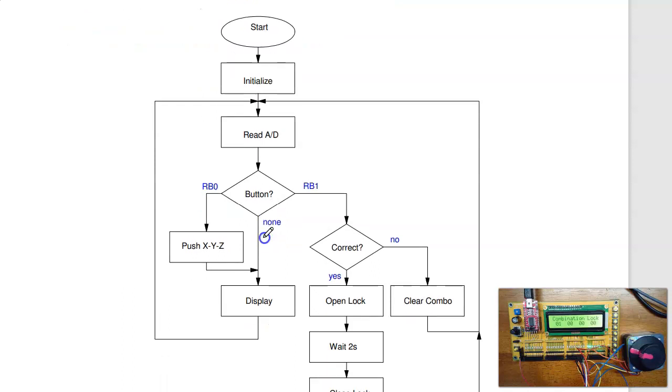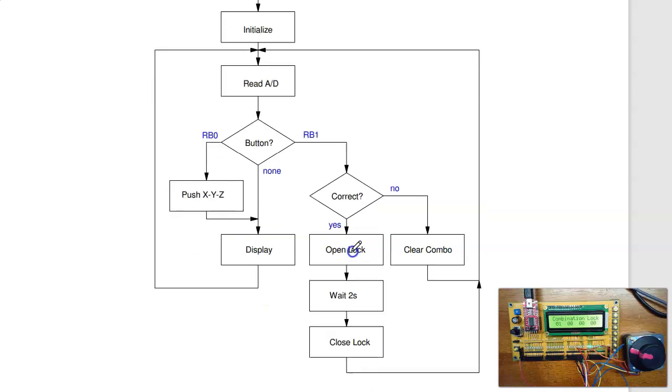So the first part is the flowchart. So here's the flowchart. I first initialize all the IO. I read the analog input. And if I do nothing, just display the number. If I hit RB0, I push that number onto the stack. Hit RB1, I check. If the number is correct, I open the lock, wait 2 seconds, close the lock. Otherwise, I clear the combo and go back.